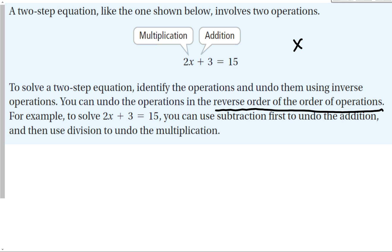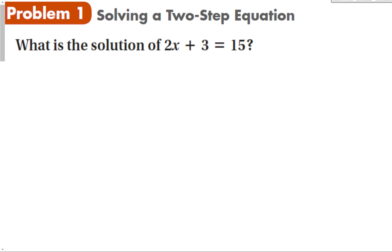For example, if x equals 2, you would first multiply by 2, then add 3 to your answer. So to solve the equation, we do this backwards: we undo the addition first, then undo the multiplication.